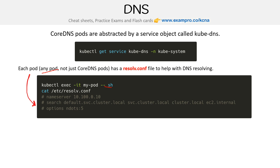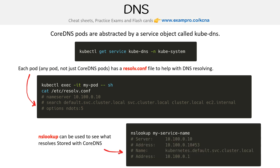It's going to show the name server — so what we are in terms of the IP address — and then the domain names that would resolve to this pod. Notice this is default.svc.cluster.local and things like that.